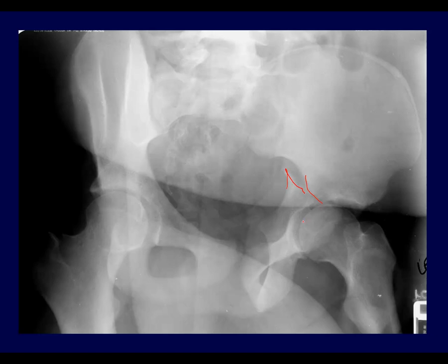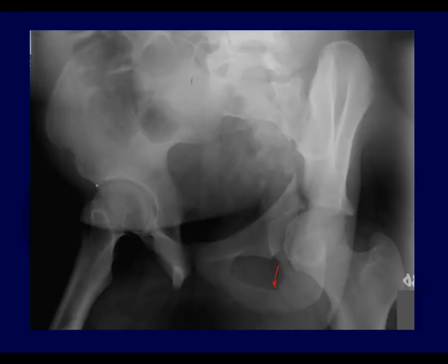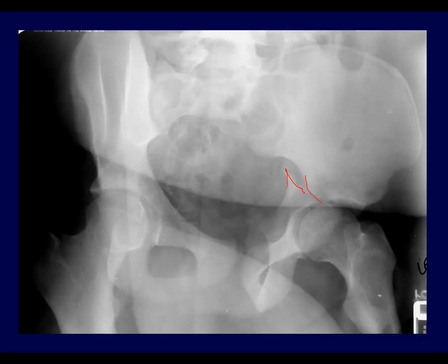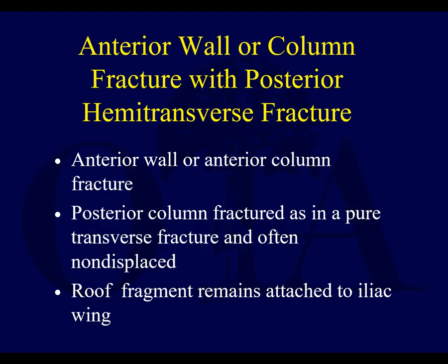You can see that the head is not congruent — looking at the opposite hip on the iliac oblique, the head is nicely congruent, but on the injured side the dome and the head are not congruent. Here's the T-shaped fracture shown on CT scan.